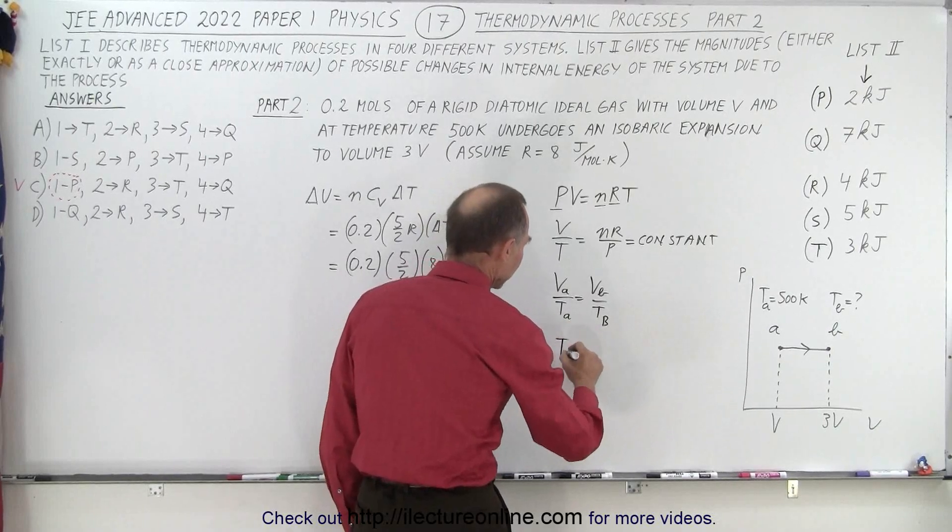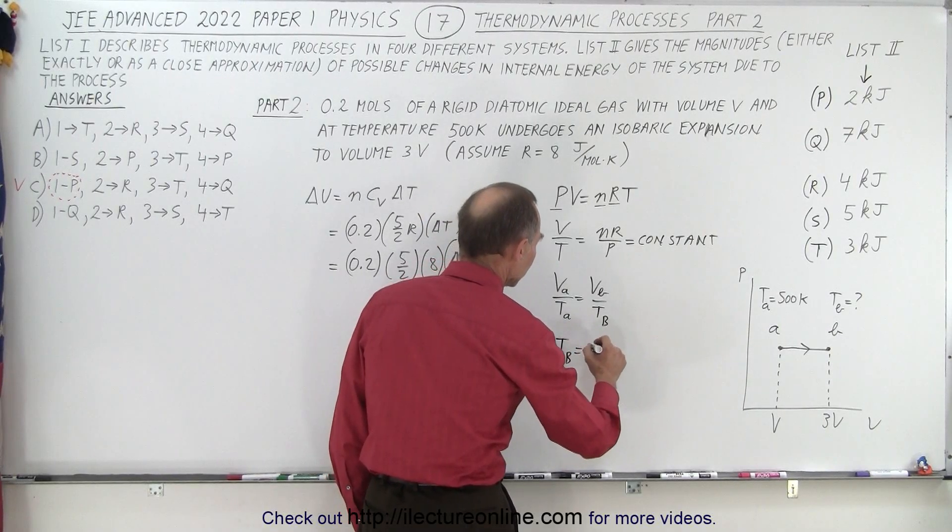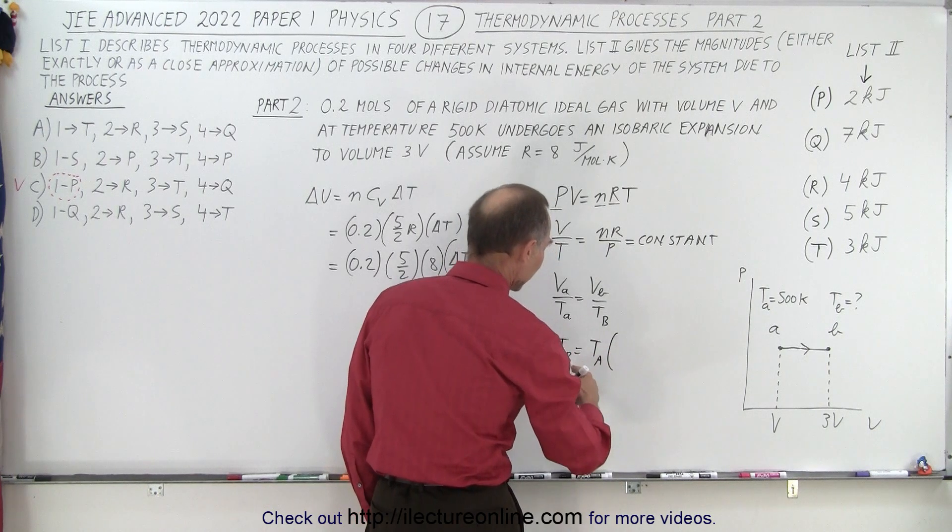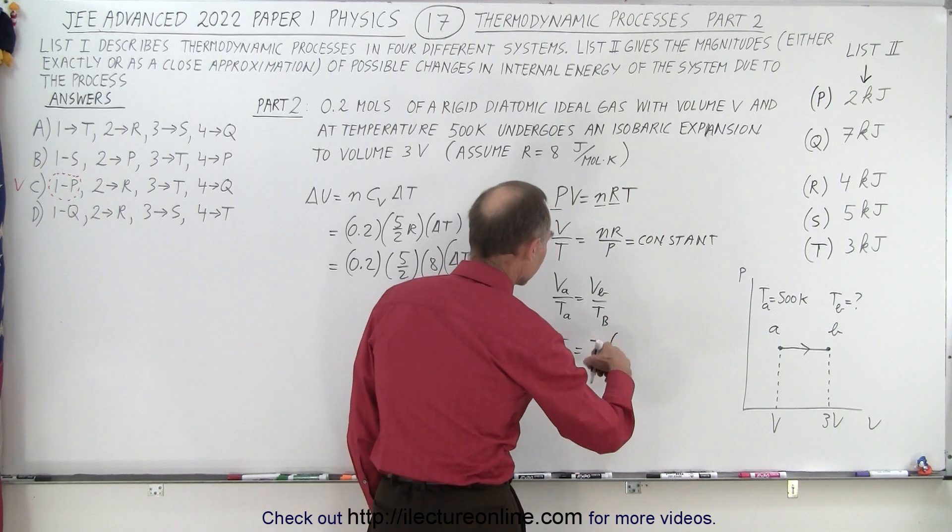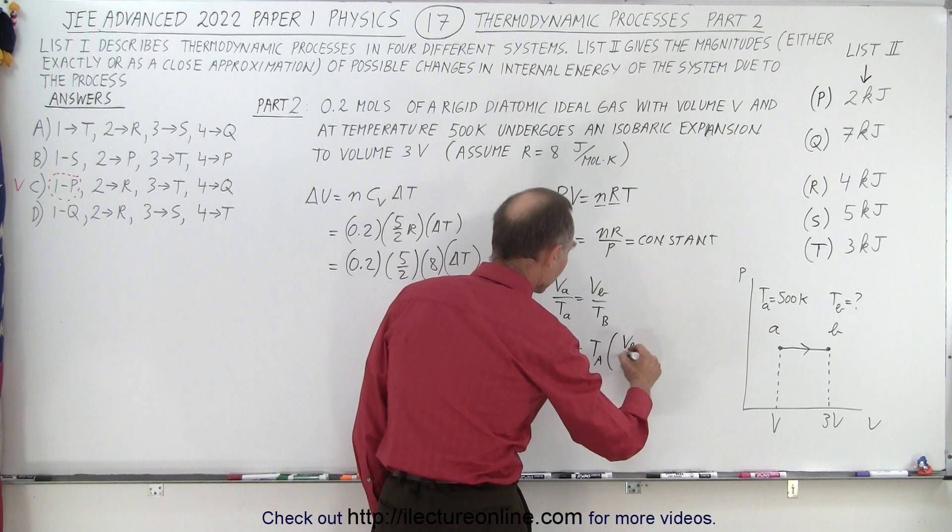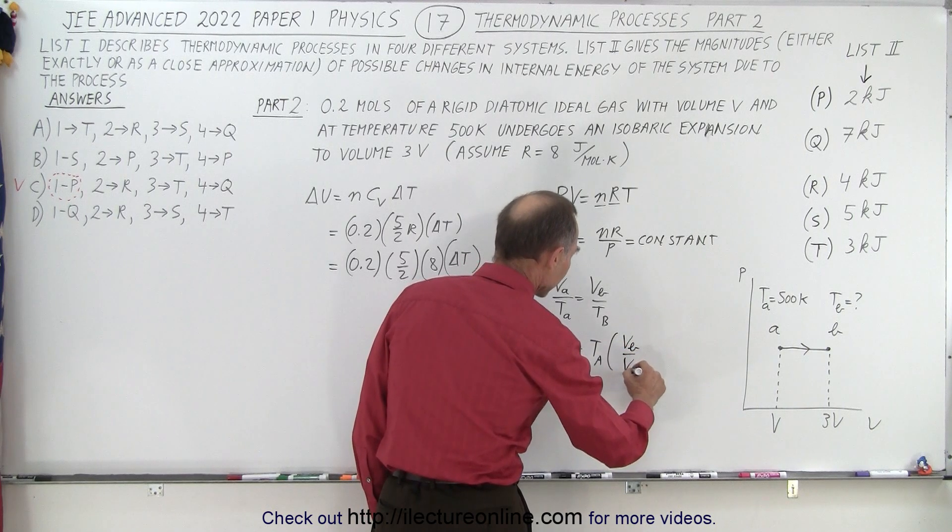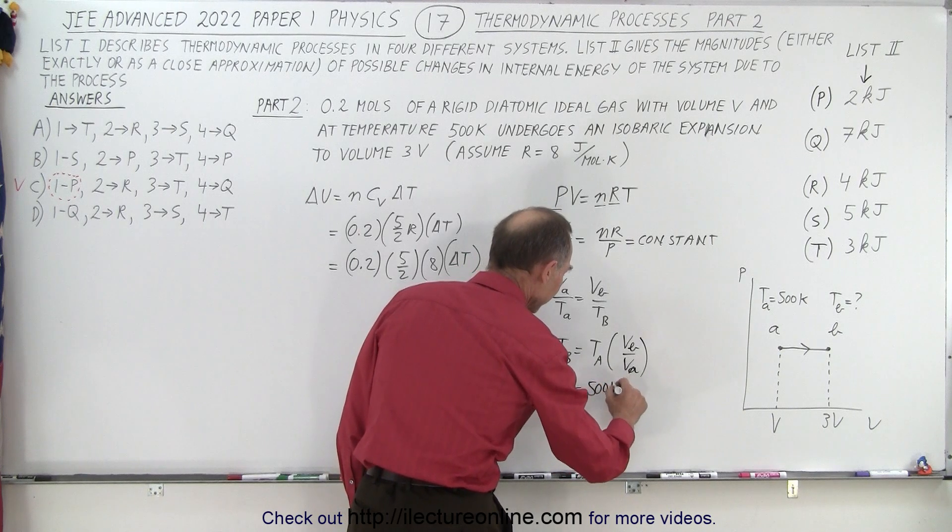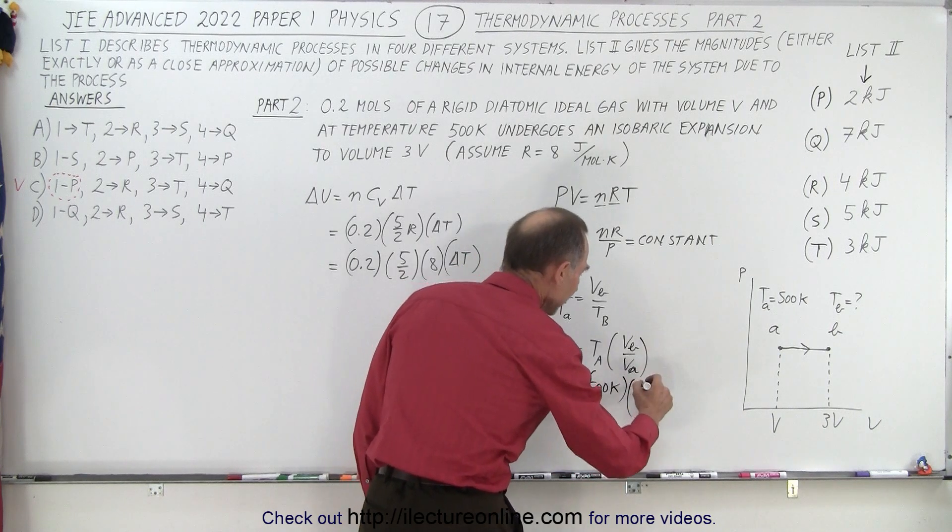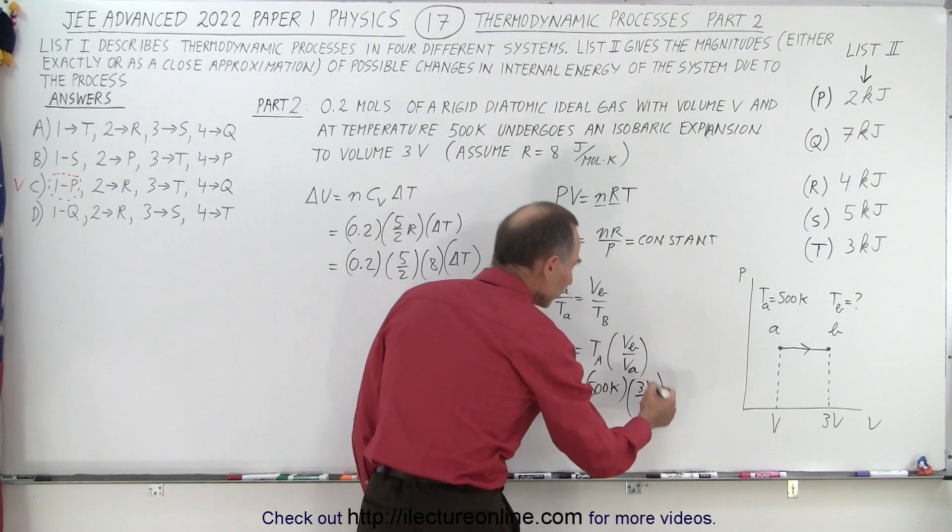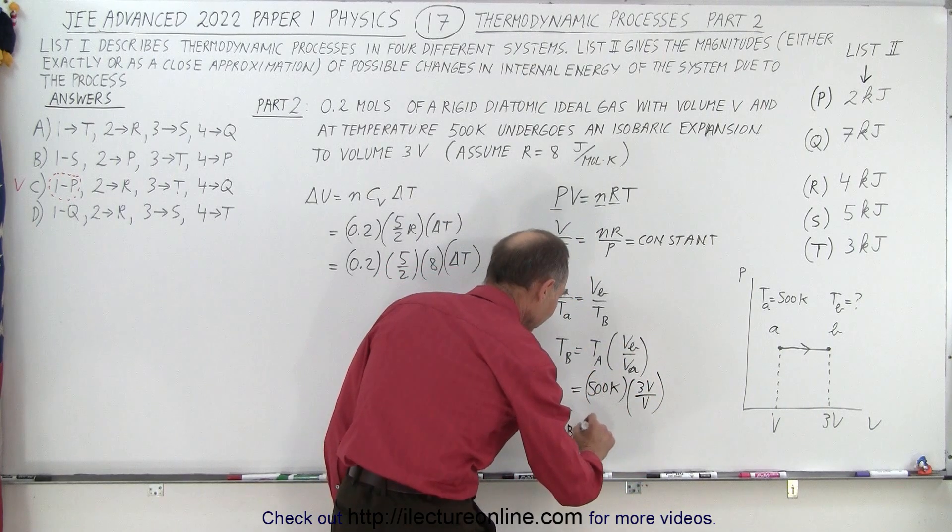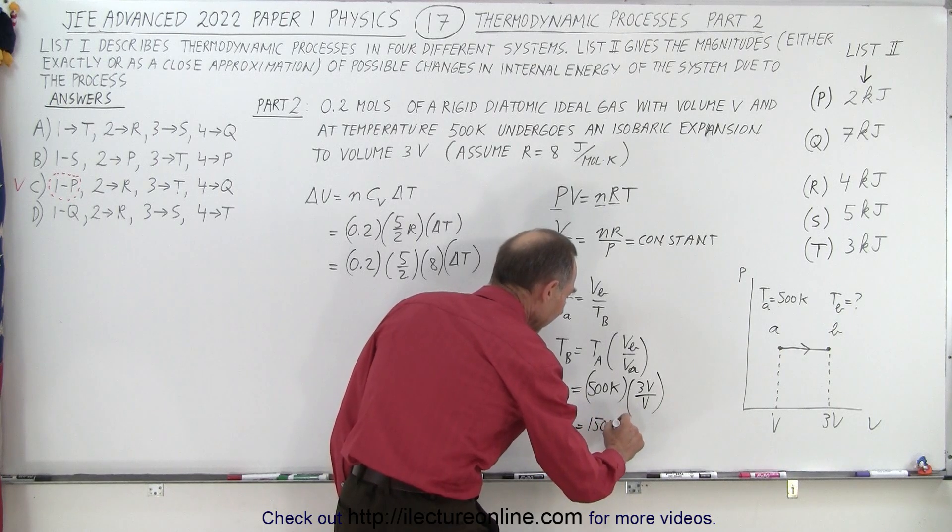Which means that volume at A over temperature at A must equal volume at B over temperature at B. Solving this for temperature at B, we can say temperature at B is equal to temperature at A times VB over VA, and so TA was 500 Kelvin. VB is 3V, VA is V, so that means that 3 times 500 or the temperature at B is equal to 1500 Kelvin.